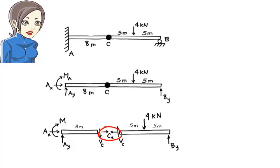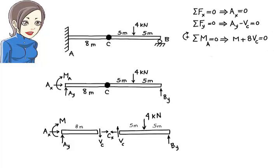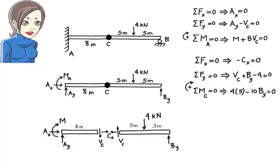Similar to the internal shear force, the internal axial force at point C must appear in a pair acting in opposite directions. The equilibrium equations for the left beam segment are shown. The equilibrium equations for the right beam segment are shown. Therefore, we have a total of six equations and six unknowns.